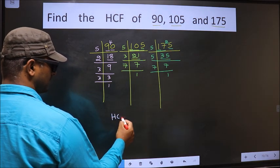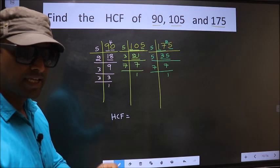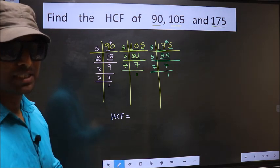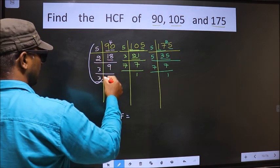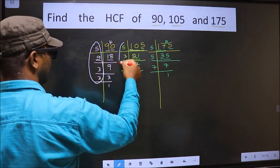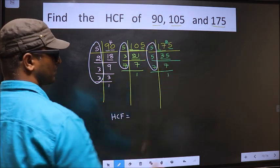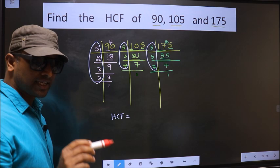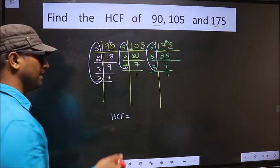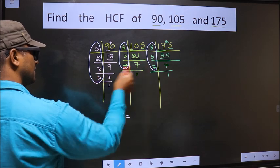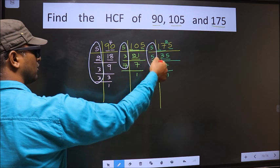So now our HCF is — HCF is the product of numbers which should be present here and here and also here. HCF is the product of numbers which should be present in all 3 places.